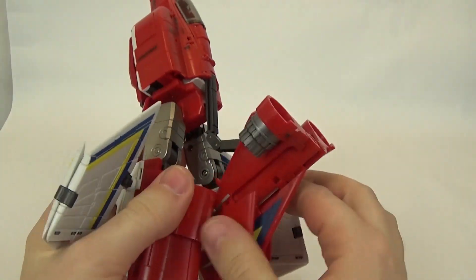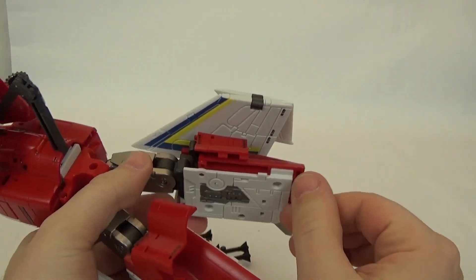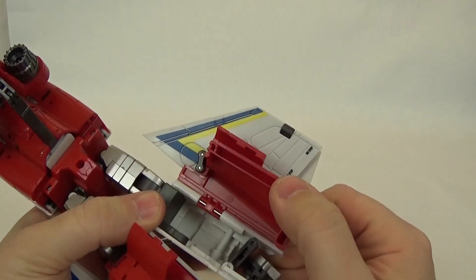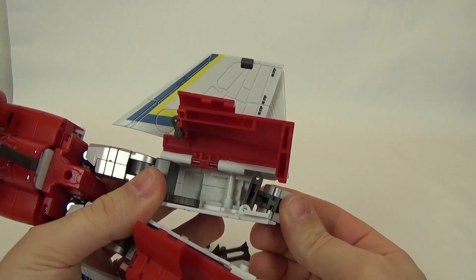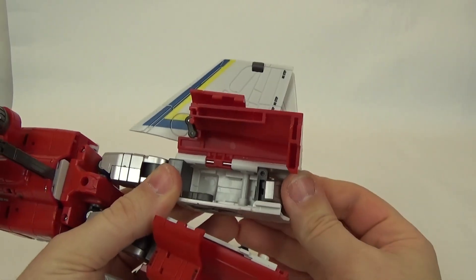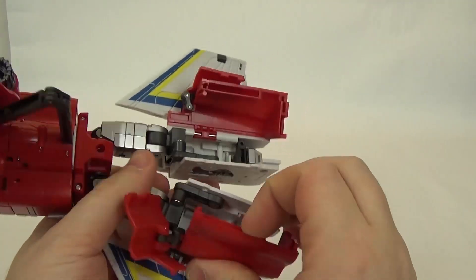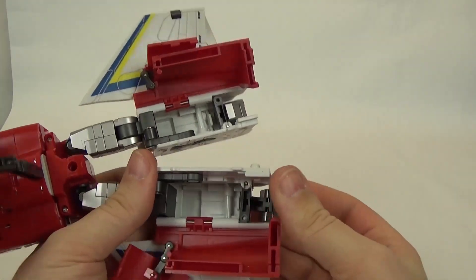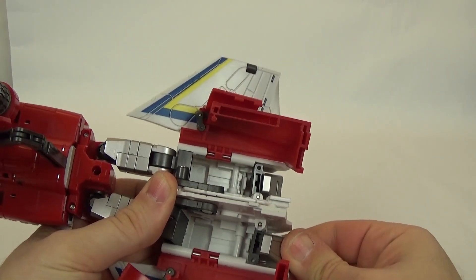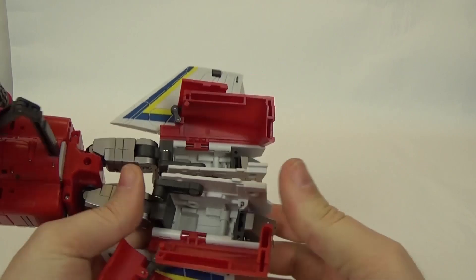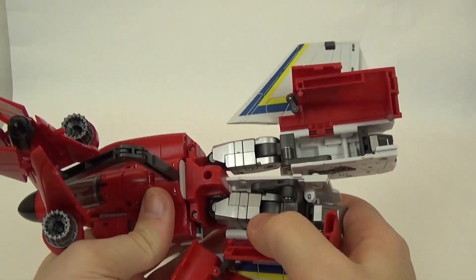However, now that we've got the top half of the jet done, we can come down to the legs. And, it's not, you know, this is certainly not a very difficult transformation either by any stretch of the imagination. You just want to flip the feet in right there. And, do the same thing on this side. Flip the foot in. Just get that squared up.